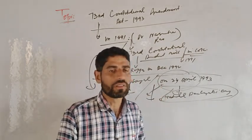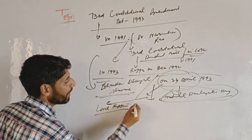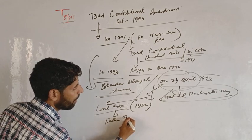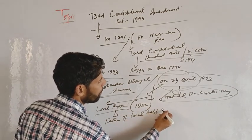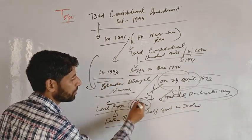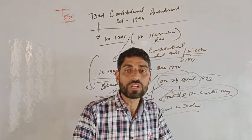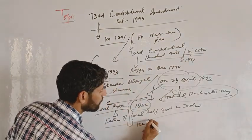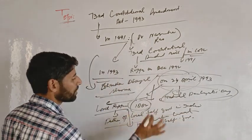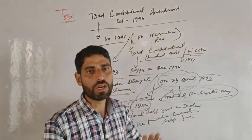Lord Rippon, a British Viceroy in India, is known as the Father of Local Self-Government in India. In 1882, he served as Viceroy and formulated local self-government in India. As far as the 73rd Constitutional Amendment Act is concerned, this act added significant new provisions to the Constitution of India.